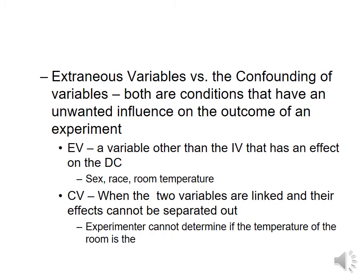A confounding variable confuses what the actual independent variable is. For example: Andrea wants to improve her standing at her job and get a raise. She decides to bring in cupcakes on Fridays, she works every weekend, and she goes to a workshop seminar. Two weeks later, she gets a raise. Can you tell me what caused her to get the raise? The answer is no — it might have been the cupcakes, the working weekends, or the seminar. They're all confused together, so we can't say what really directly caused the increase in pay.